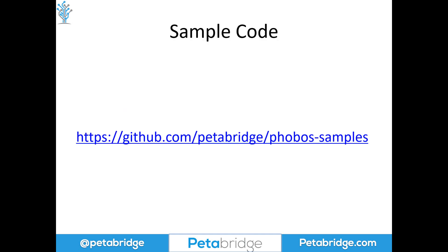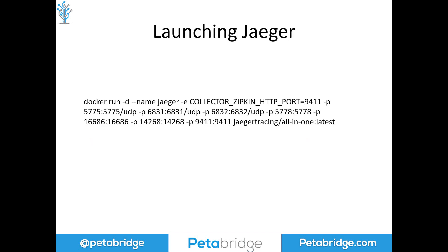If you want to follow along with the sample I'm going to be using today to generate the data, you can clone the code sample from the Phobos samples repository on GitHub, and we'll include a link down below in the description. You'll need a Phobos NuGet key in order to run this, so you can go ahead and request an evaluation using the other link we're going to show you at the end of this video.